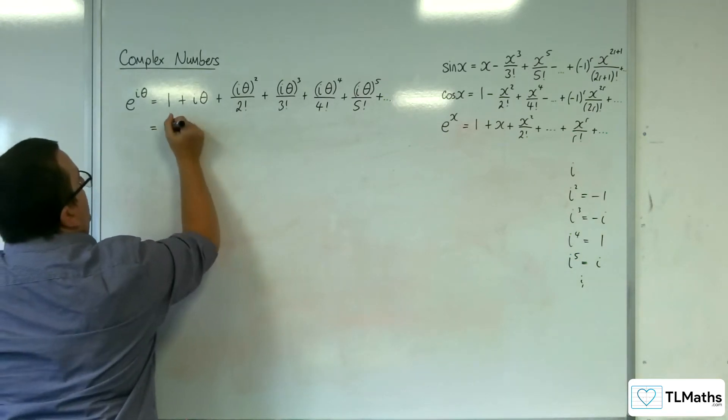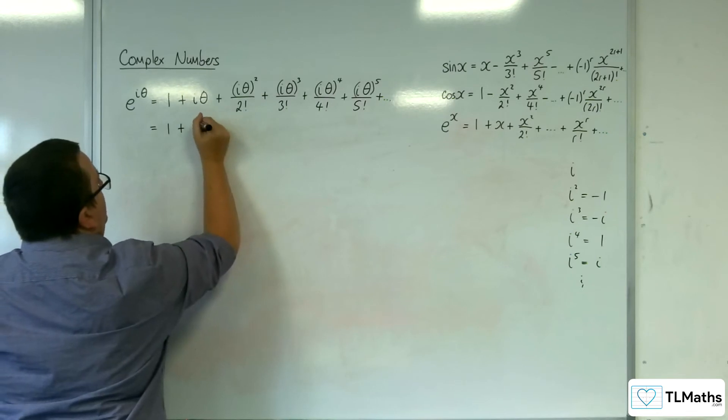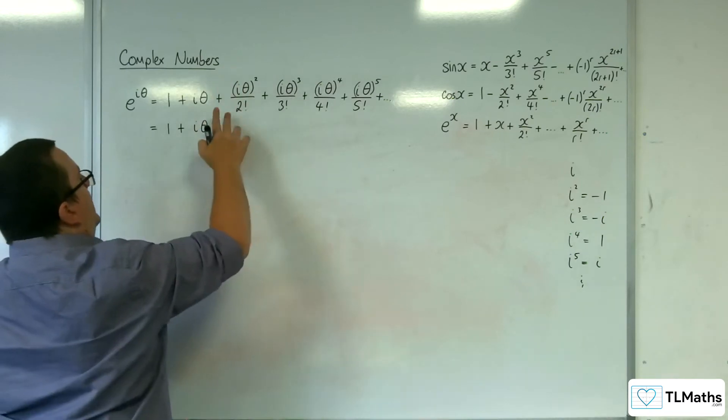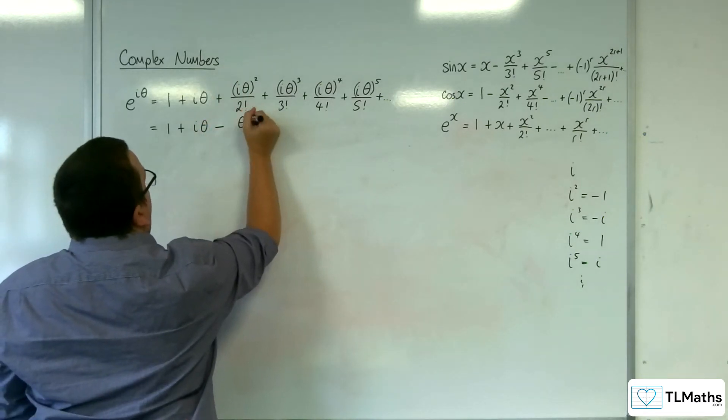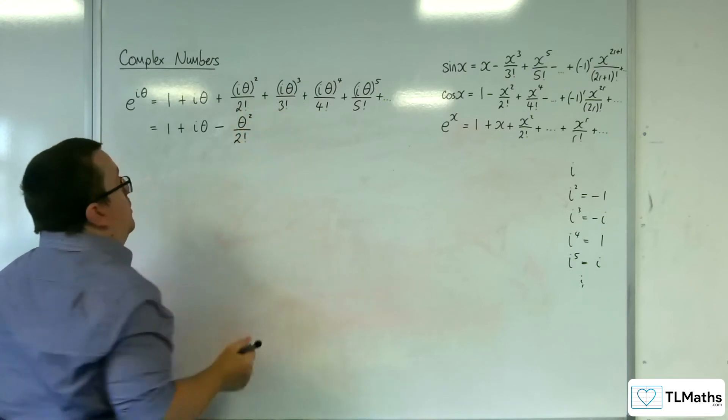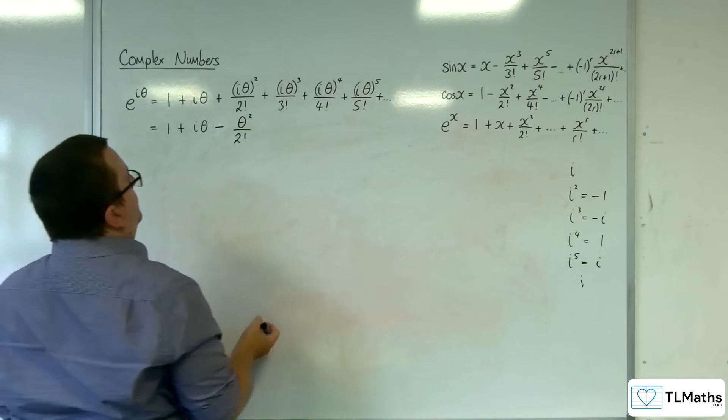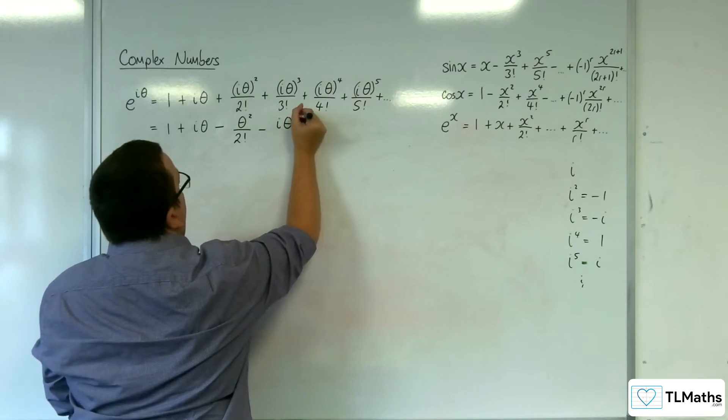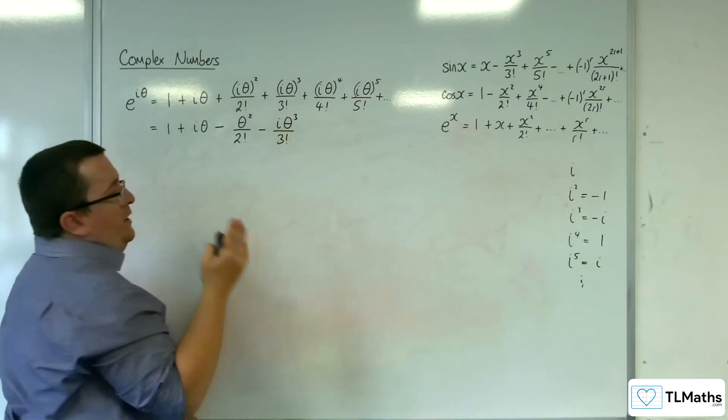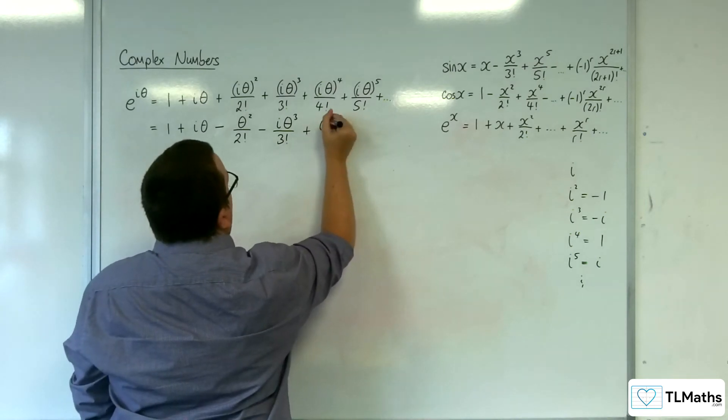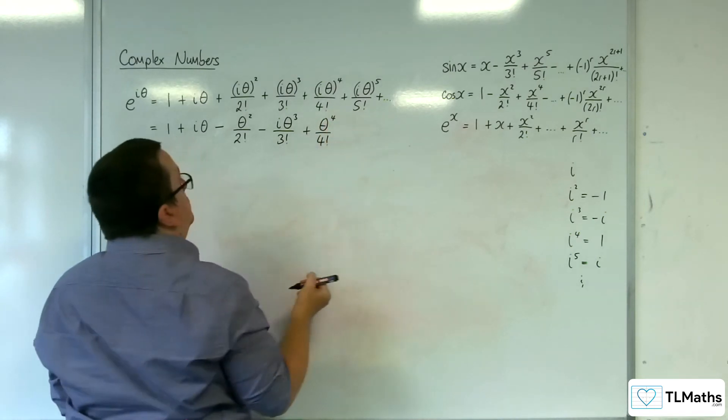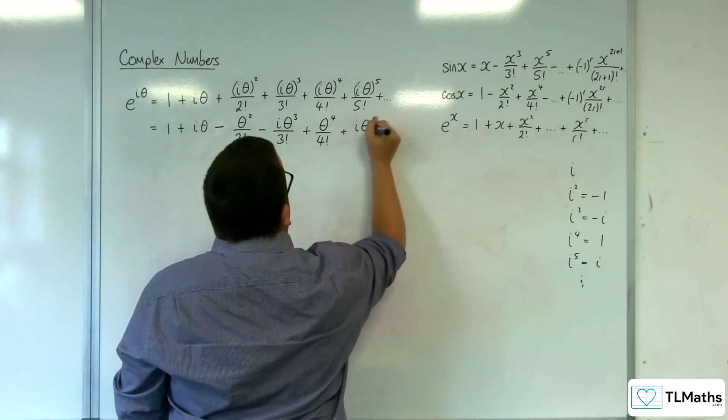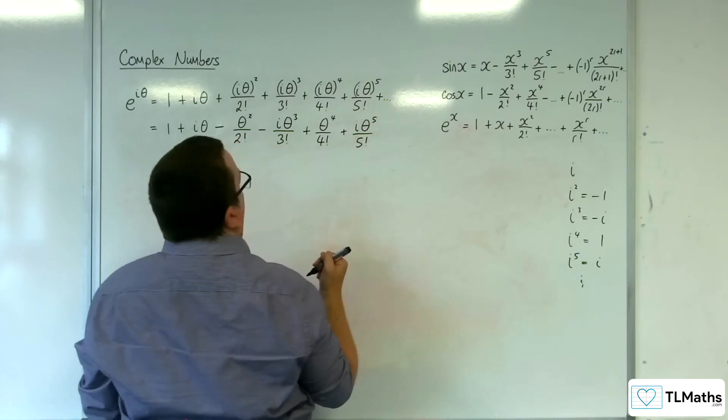So let's simplify this. We've got 1 plus i theta plus, now you've got i squared here, which is minus 1. So you can have minus, or take away, theta squared over 2 factorial. I'm going to leave the factorials in there. I'm not going to simplify those. Then you've got i cubed, so minus i, so take away i theta cubed over 3 factorial. Then you've got i to the 4, so 1, so plus theta to the 4 over 4 factorial. Then you've got i to the 5, so i is plus i theta to the 5 over 5 factorial.